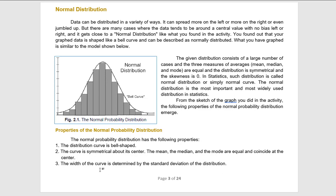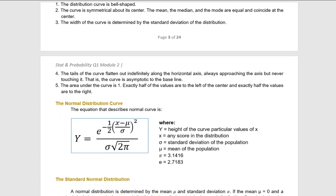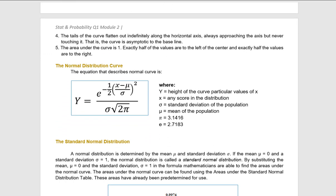First, it is indeed bell-shaped. Number 2, the curve is symmetrical about its center — the mean, the median, and the mode are equal and coincide at the center. Three, the width of the curve is determined by the standard deviation of the distribution, which we will find out is actually 1. Number 4, the tails of the curve flatten out indefinitely along the horizontal axis, always approaching the axis but never touching it — the curve is asymptotic to the baseline. Number 5, the area under the curve is 1. Exactly half of the values are to the left of the center, and exactly half are to the right, so the area on either side alone is 0.5.